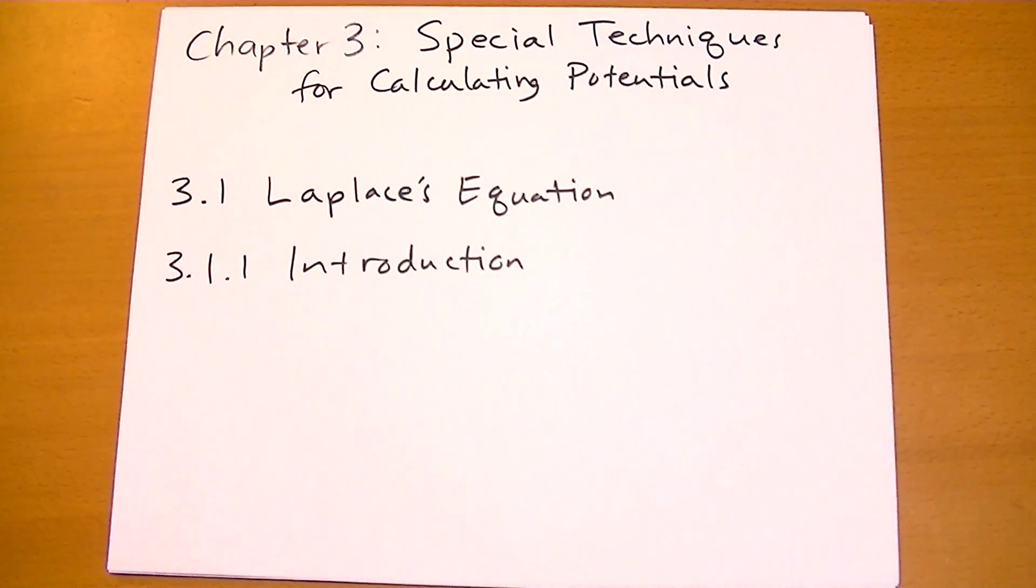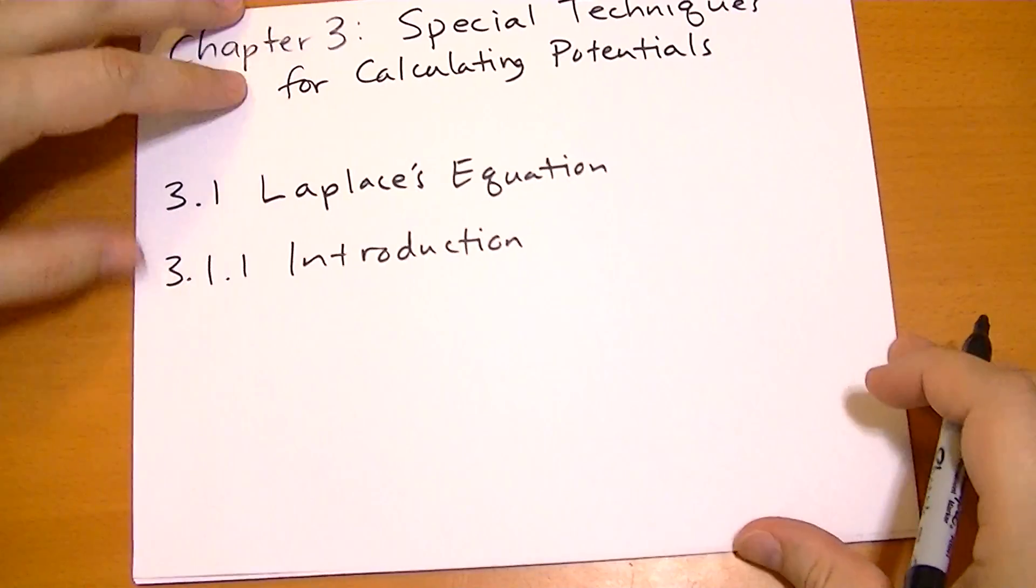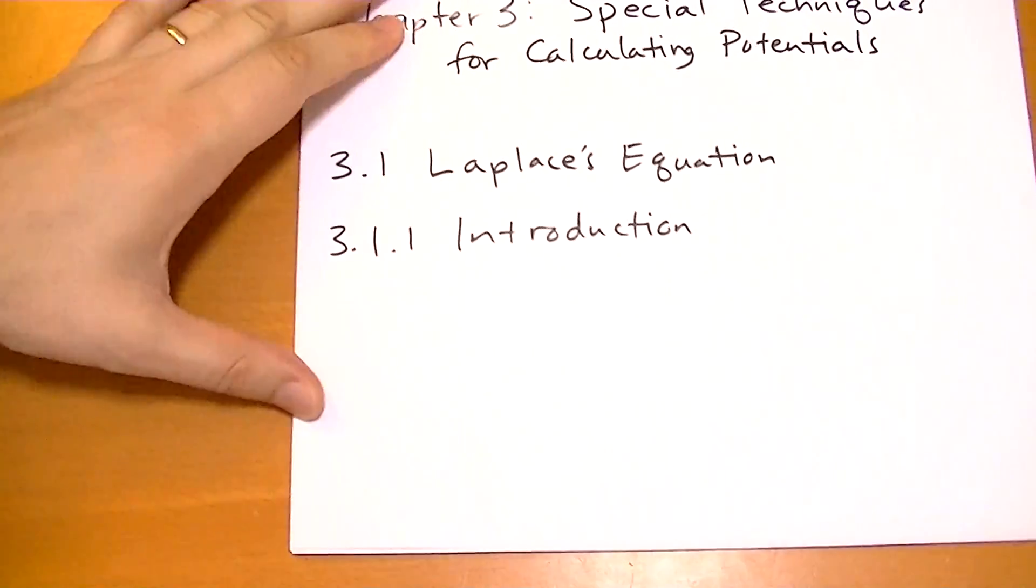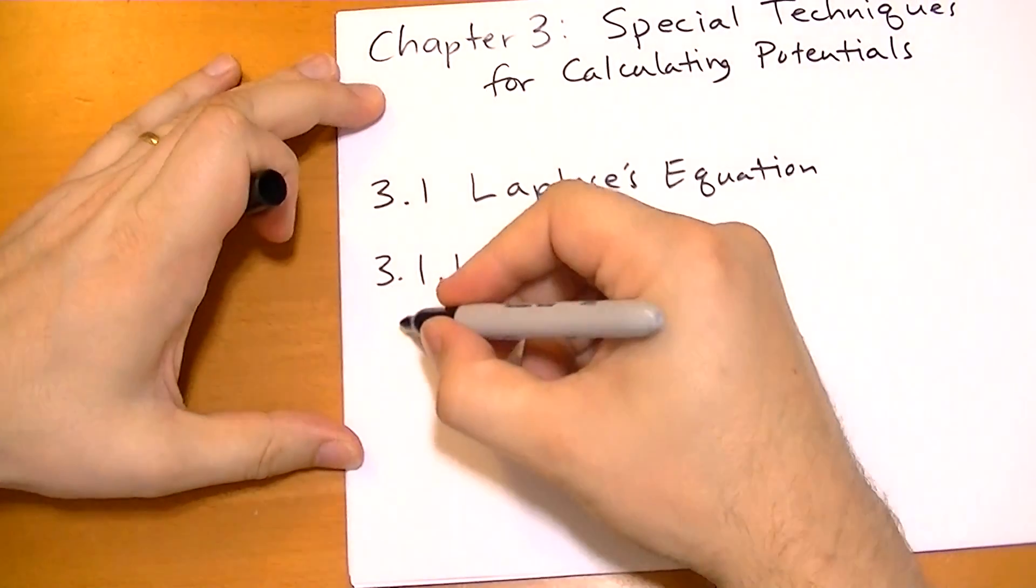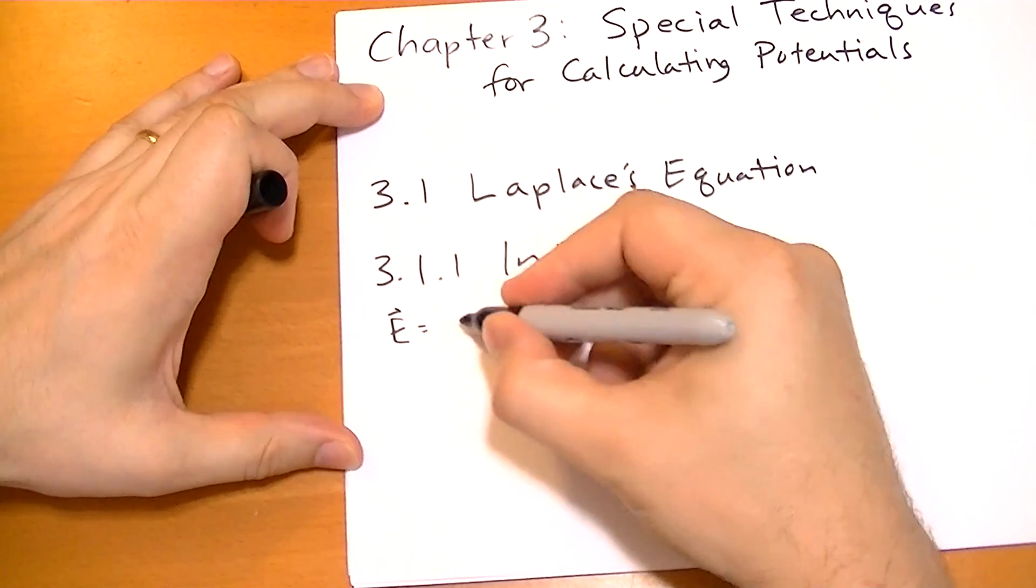So the last chapter we spent trying to discover what the force on a particle was given static source charges that aren't moving. And we came up with a couple of equations. We found out that we could use Coulomb's Law to create an electric field,